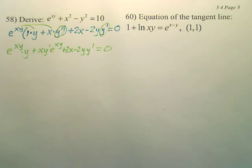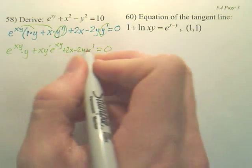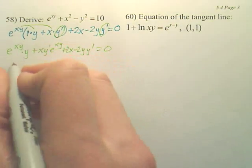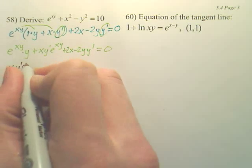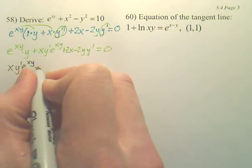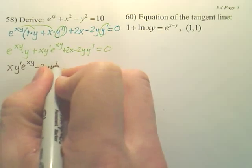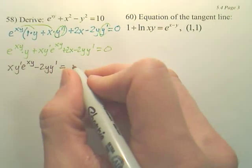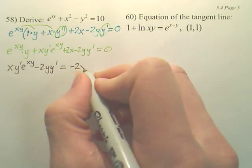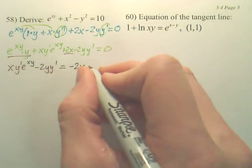And the next step, I think, let's get the y primes by themselves. So let's move everything else over. x times y prime times e to the xy minus 2y times y prime equals—move the 2x over, so it becomes negative 2x. And we'll move this over.